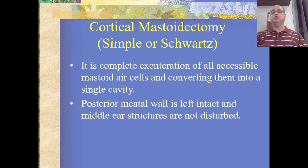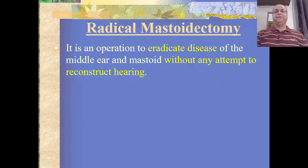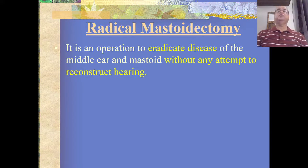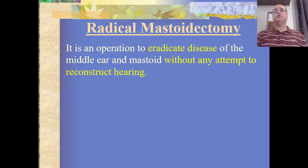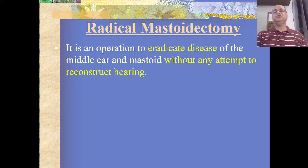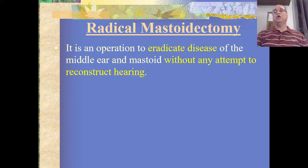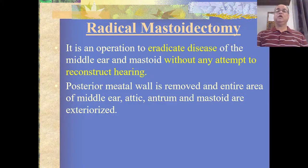In contrast, radical mastoidectomy — as the name indicates — is a canal wall down procedure. It is an operation to eradicate the disease of the middle ear and mastoid without any attempt to reconstruct hearing, because the primary objective of these surgeries is to make the ear safe. Radical mastoidectomy was directed towards achieving that goal, so there was no attempt to reconstruct hearing, and the posterior meatal wall is removed.